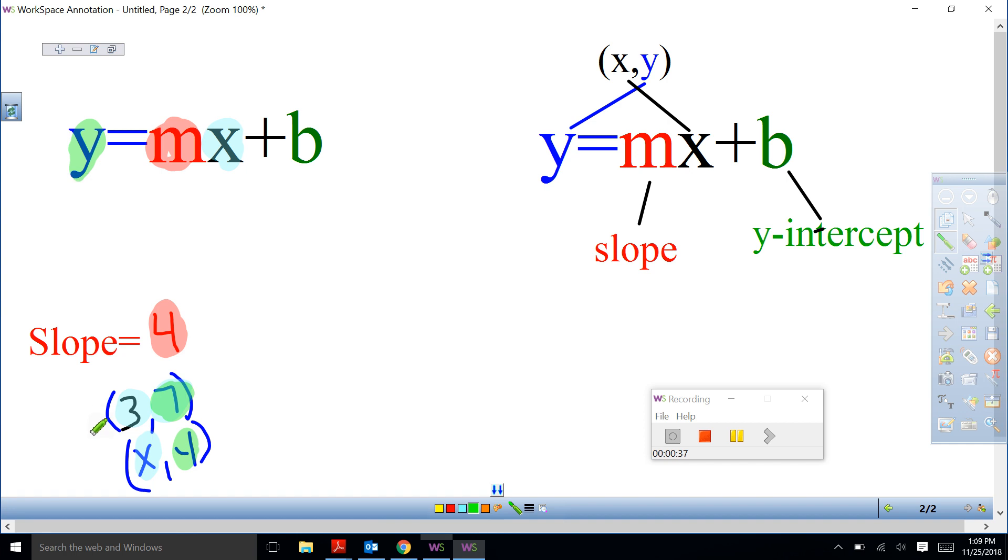When we get a set of coordinates, we have X and Y. We're going to plug in 7 for our Y, plug in 4 for our M, and plug in 3 for our X.